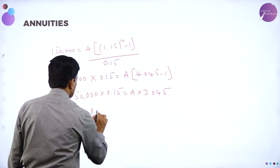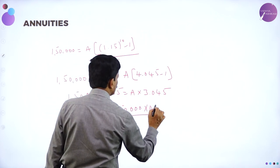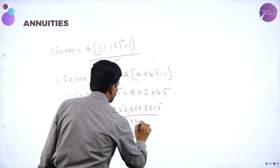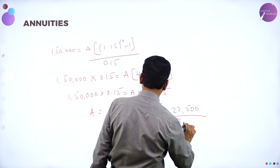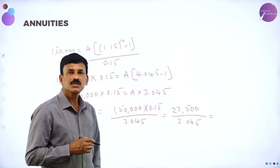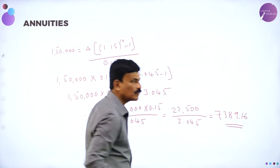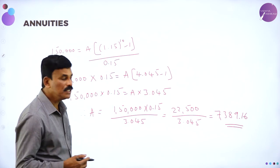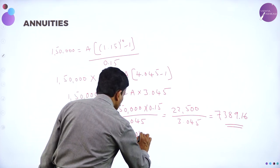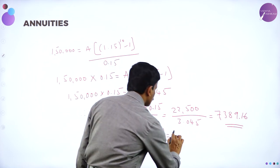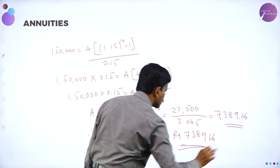Therefore, A equals 1,50,000 into 0.15 divided by 3.045, which equals 22,500 divided by 3.045, giving 7,389.16. Therefore, the annual amount to be invested is rupees 7,389.16.